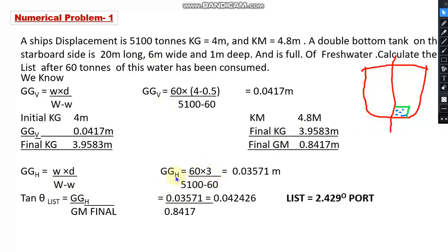See, again, we have to take the same mass in both these cases. The Ws will be same here. And d is the distance in the horizontal plane between the center of gravity of the ship and center of gravity of the tank.